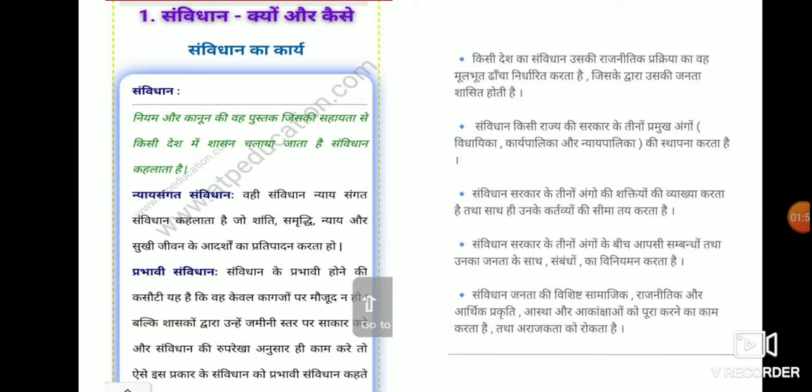Samvidhan defines the powers of the three organs of government and sets the limits of their duties. It also defines the mutual relationship among the three organs of government and their relationship with the people, as well as the specific social rights of the citizens.